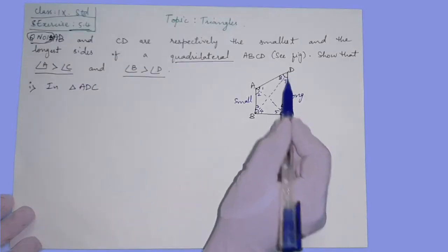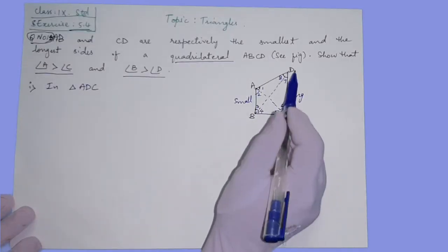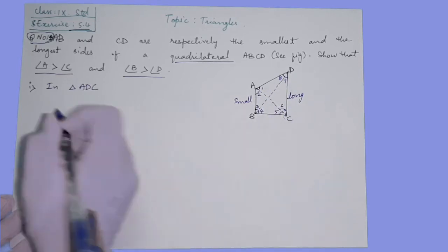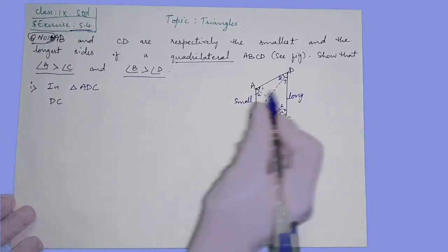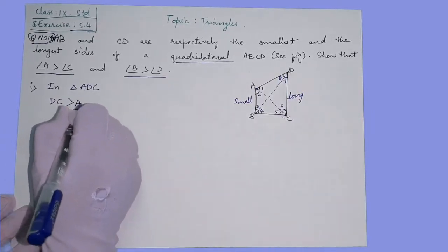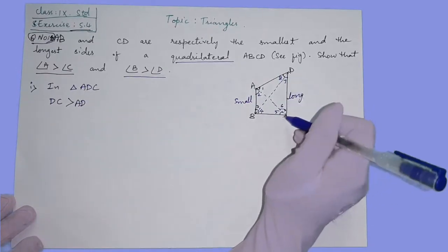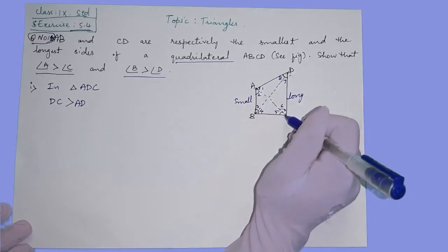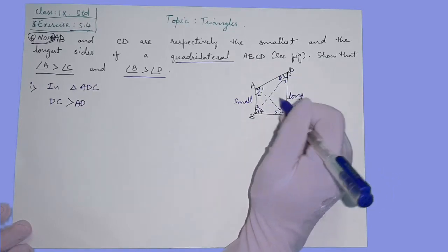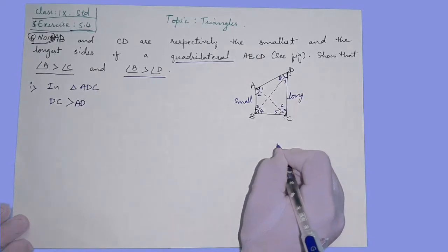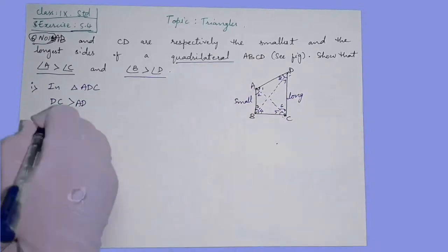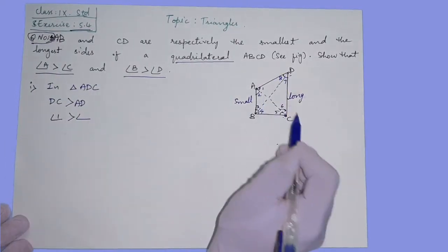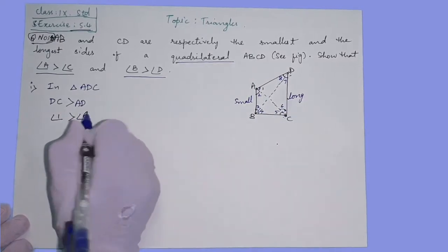DC is the longest side, so definitely AD will be less than DC. DC is longer than AD. Now DC's opposite angle is angle 1, which is greater than AD's opposite angle 6.